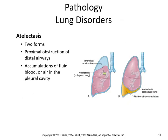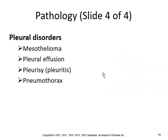Atelectasis has two forms: proximal obstruction of the distal airways, and accumulation of fluid — usually blood or air — in the pleural cavity. Atelectasis is a collapsed lung due to fluid or air accumulation.